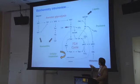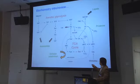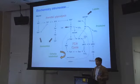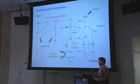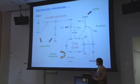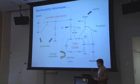Pyruvate can also be metabolized in mitochondria. These are the powerhouses of our cells. When coupled to respiration, they generate ATP and many biosynthetic intermediates within the cell, in particular lipids, as we'll talk about.